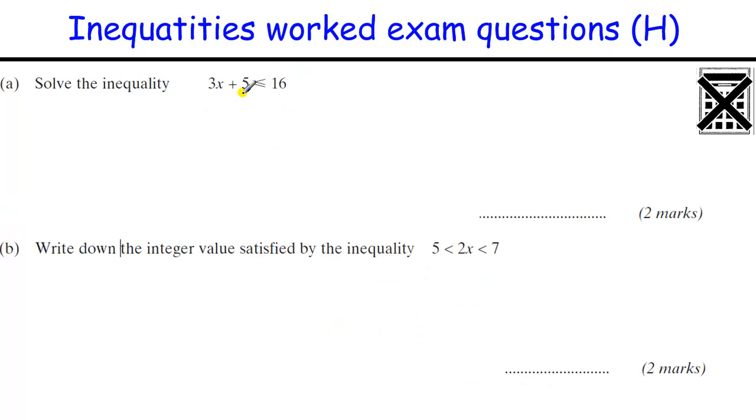So this inequality, 3x plus 5 less than or equal to 16, take away the 5, 3x is less than or equal to 11, so x is less than or equal to 11 divided by 3. Just to put that as a mixed number, so we get 3 and 2 thirds, or 3.6 recurring, much easier to write it as a fraction though.